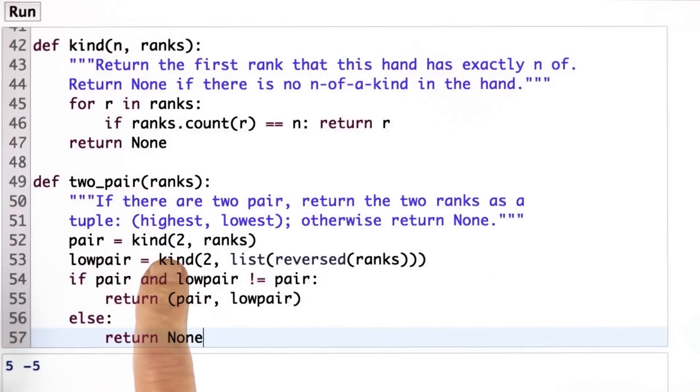So here's how I chose to do it. I first picked out the first pair and that should be, if there are two pairs, that should be the highest because remember the ranks are ordered from highest to lowest.